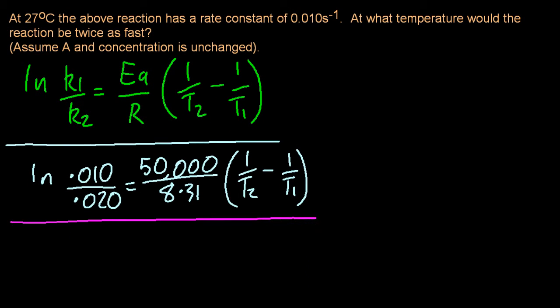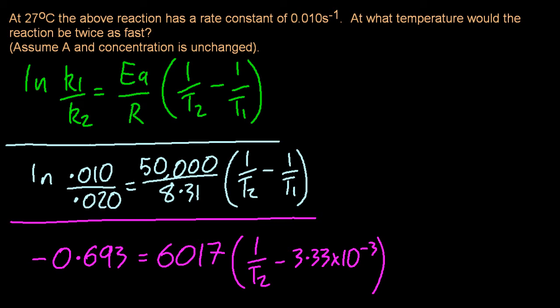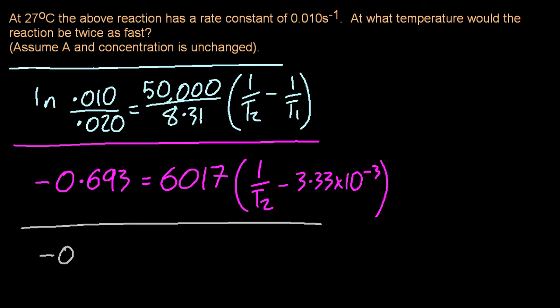I'm carrying on the working. 0.693 is 6017. And notice I'm trying to keep at least three sig figs, because the question has two sig figs in it. So I can round at the end.